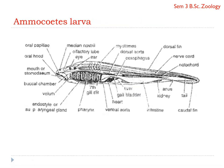Internally, the mouth leads into the oral hood, which leads into the buccal funnel. In the case of the adult, the mouth leads into the oral buccal funnel provided with dental plates and teeth-like structures. But in the case of the larvae, the buccal funnel and the dental plates are completely absent.